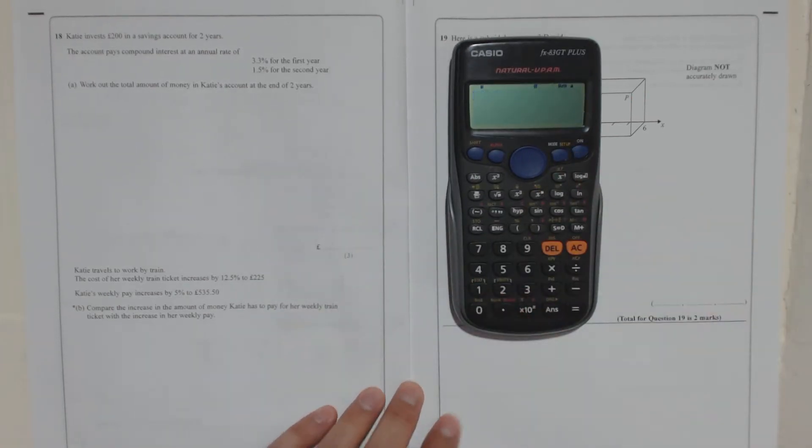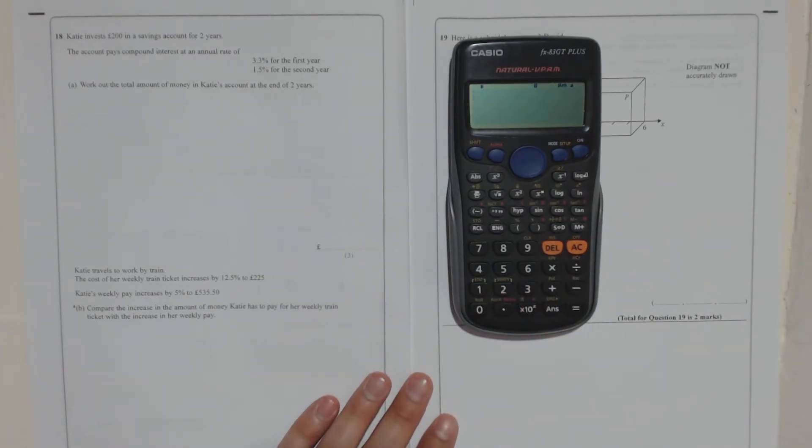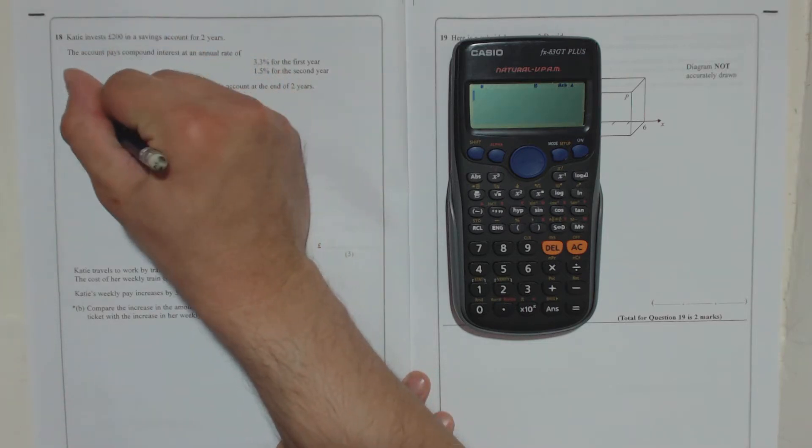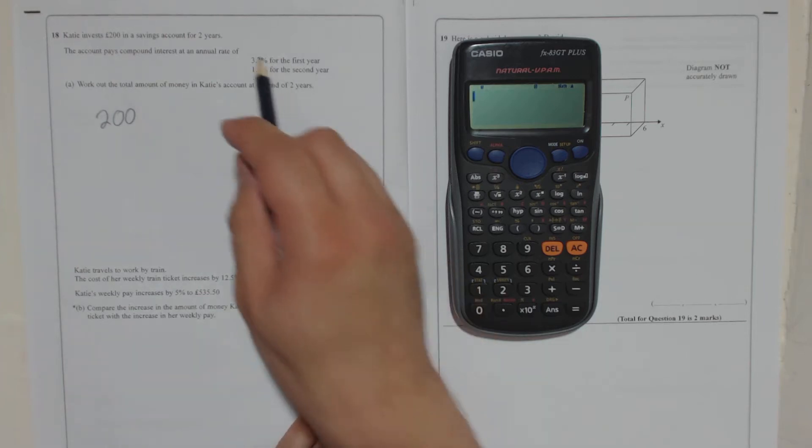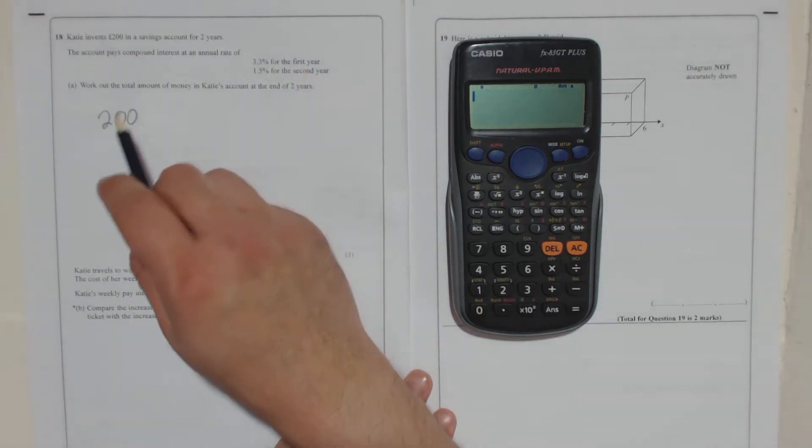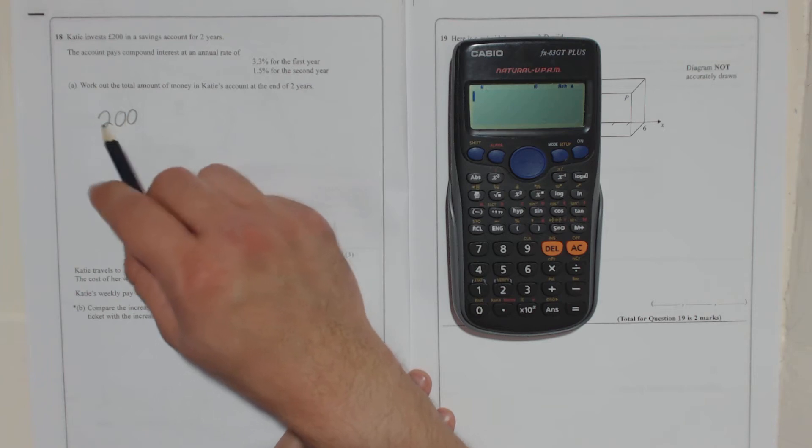Right, so if you want to increase an amount by a percentage, you have to take that amount. And then you have to think in the first year, take that as 100%, that's the original amount.